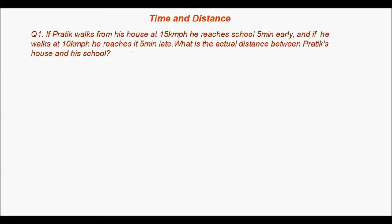Hi friends, my name is Pratik Sirvastwa and our today's topic is time and distance. Time and distance is one of the very important topics and today we are going to see some important questions related to time and distance. In time and distance we have only one formula which is d = s×t, where d is distance, s is speed or velocity, and t is time.